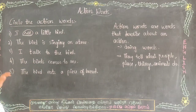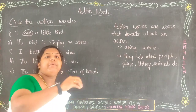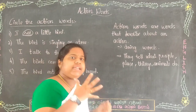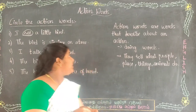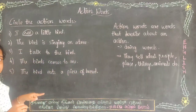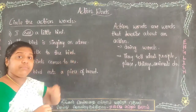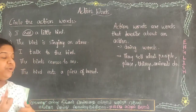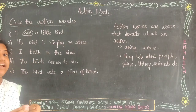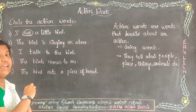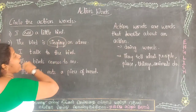Second sentence: the bird is singing on a tree. Is 'bird' an action word? No. Is 'tree' an action word? No. Is 'singing' an action? Yes, it is an action. So, 'singing' is an action word.